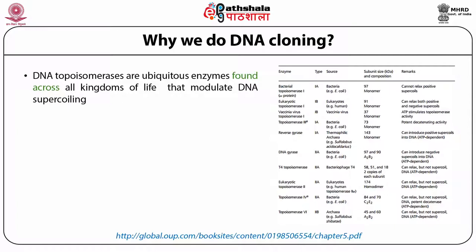From vaccinia virus, we have another topoisomerase 1 belonging to type 1B category. It is a monomer of 37 amino acids. Topoisomerase 3 from E. coli is a type 1A topoisomerase, a monomer of 73 amino acids with potent decatenation activity. Reverse gyrase, type 1A, is from thermophilic archaea — a 143 amino acid monomer that can introduce positive supercoils into DNA in an ATP-dependent manner.